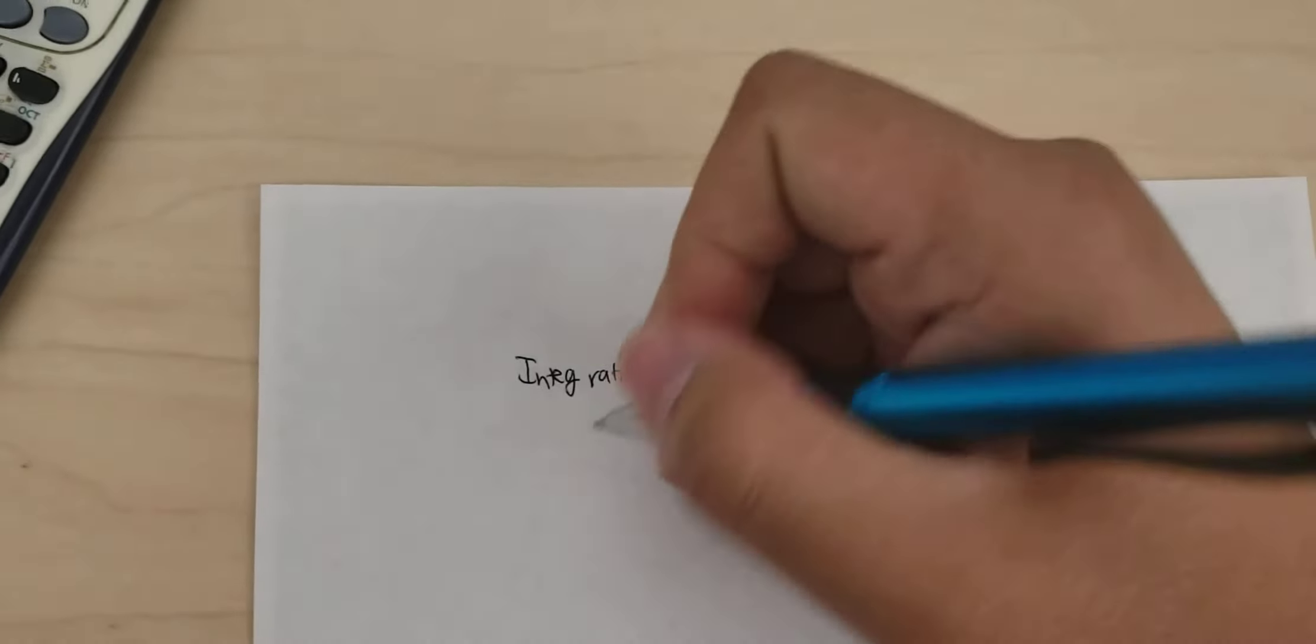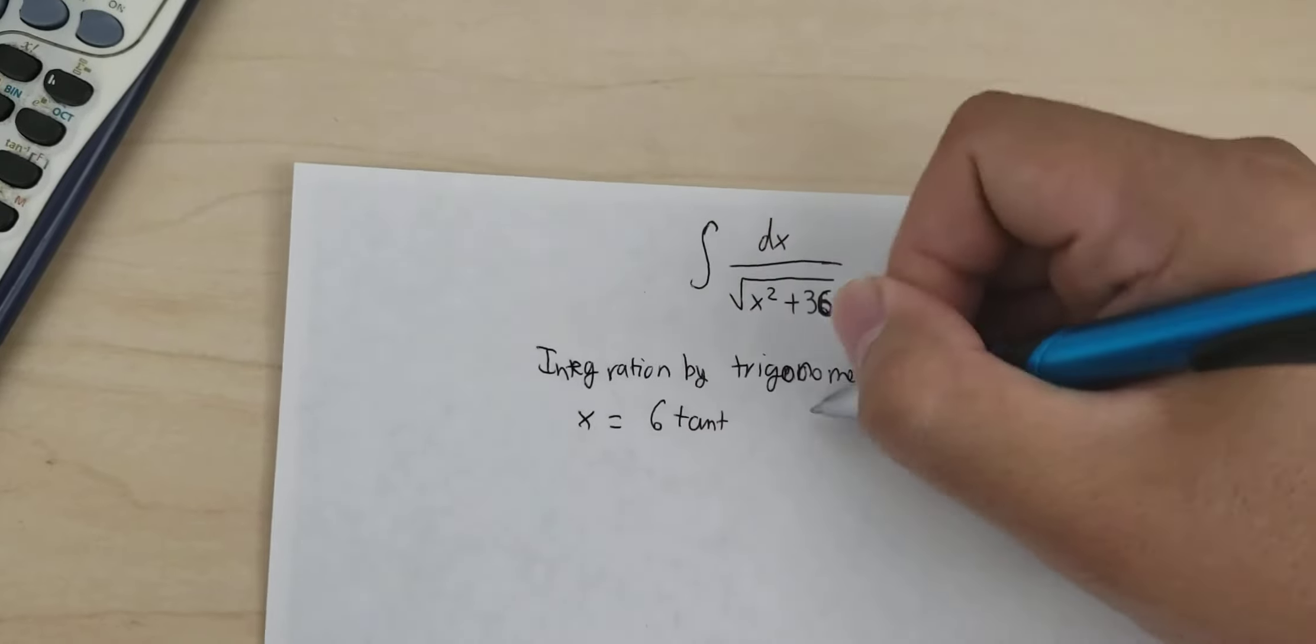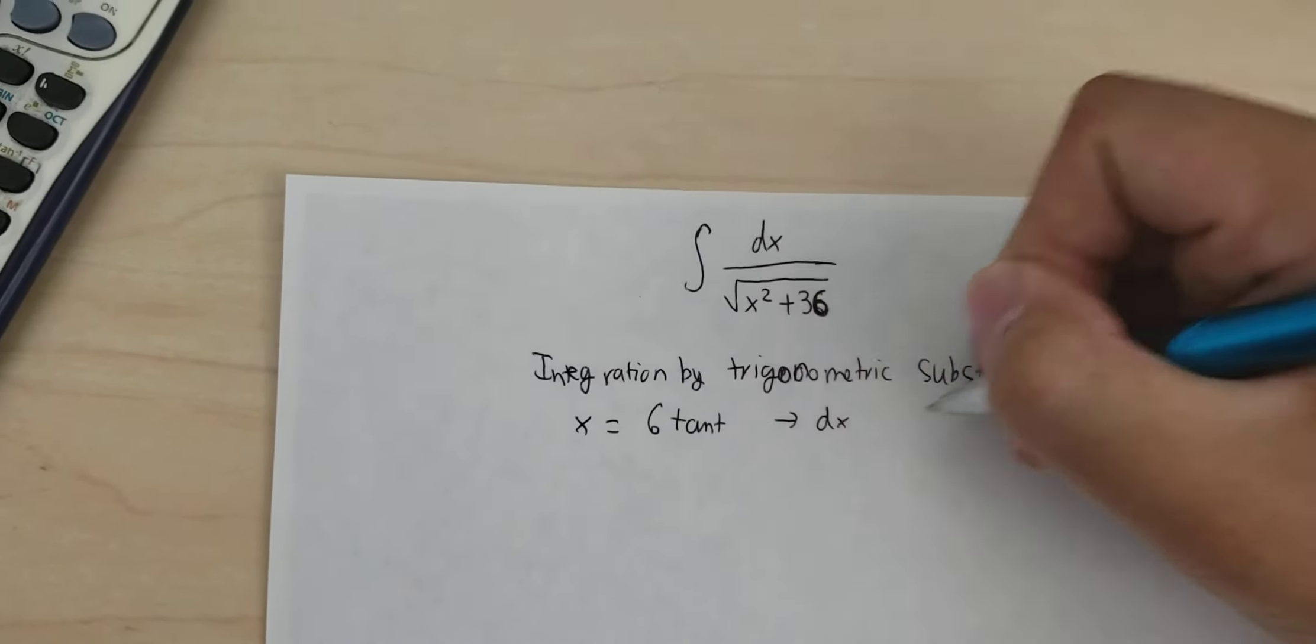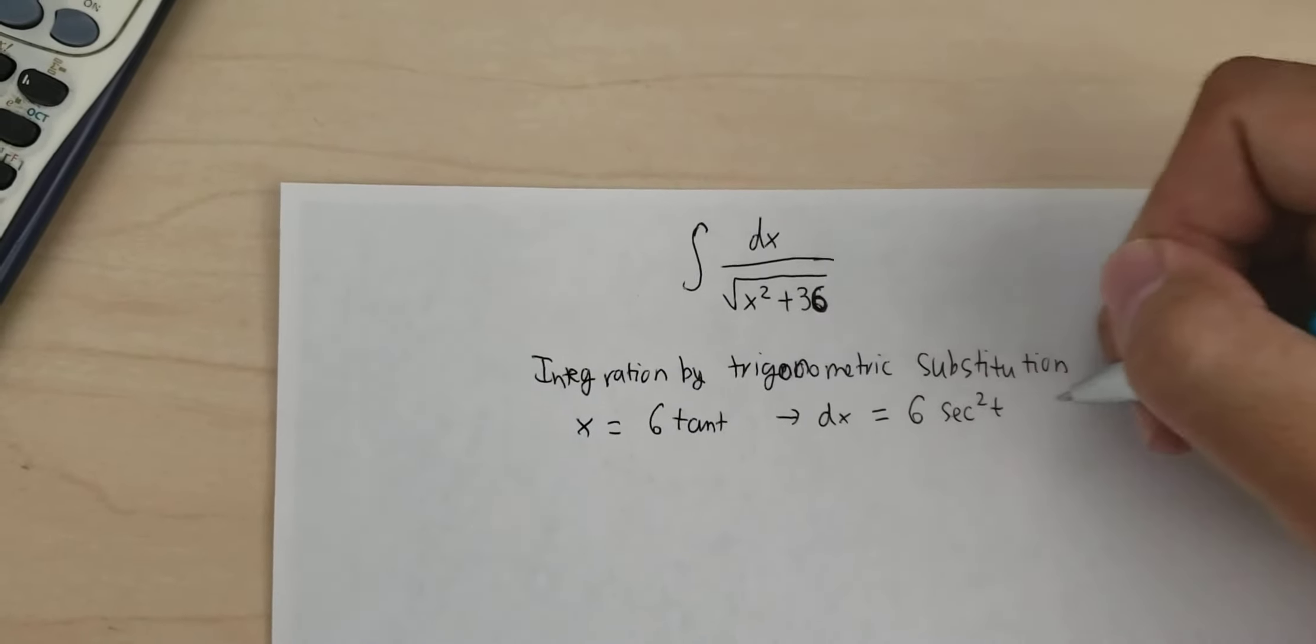So we put x equal to 6 tan t. dx equals 6 secant squared t dt.